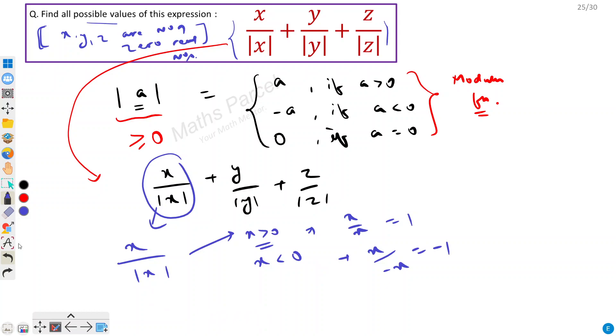Now for this we got value of 1 and minus 1. Now this would be same for y upon modulus y because there is no difference, right? All these expressions are same. The only thing is that the name of variable is changed: x, y, z. So all these can hold 1, minus 1, 1, minus 1, 1, minus 1.